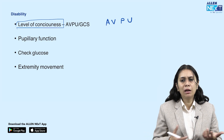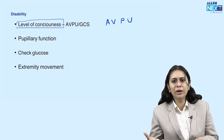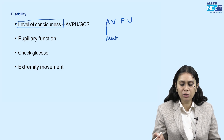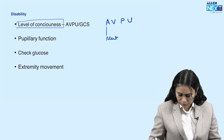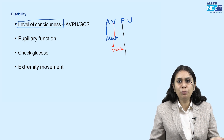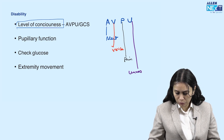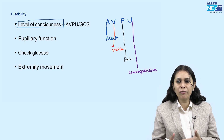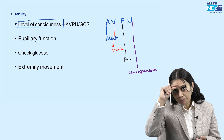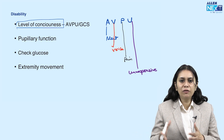A recent exam question asked: what does D stand for in ABCDE? D is for disability. We assess disability using AVPU: A — is the patient alert? V — does the patient respond to voice? P — does the patient respond to pain? U — is the patient unresponsive? So AVPU gives us a quick level-of-consciousness assessment.